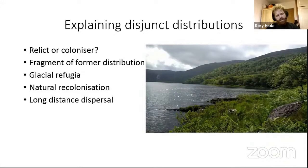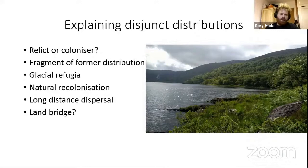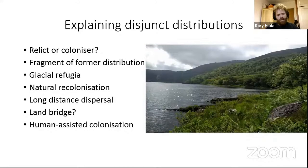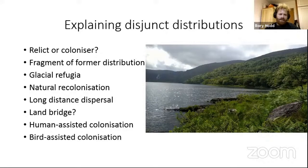There are a few different mechanisms for recolonization. First, there's natural long-distance dispersal, by seed or by spore depending on the species. Then there's the idea of the land bridge — that the island was once continuous with the European continent for a while, and species gradually migrated across to Ireland. Once the land bridge was lost, species could no longer migrate. Then there's human-assisted colonization — Ireland has a long history of human habitation and trade with other areas, particularly Spain and southern Europe.